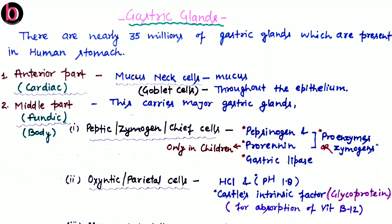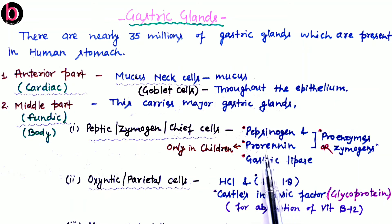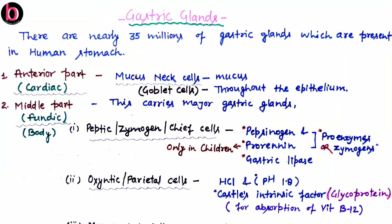When pepsinogen is converted to pepsin by HCl, it causes digestion of any kind of protein. Prorenin is converted to renin by the activity of HCl, and renin causes conversion of the milk protein casein into paracasein. The secretion of prorenin and renin occurs only in children; in adults this is not secreted, and this function is also performed by pepsin.